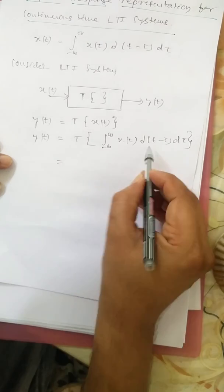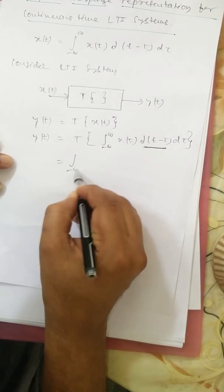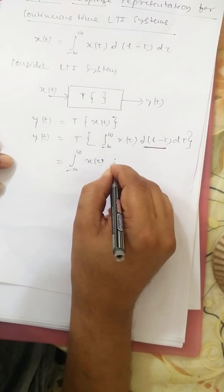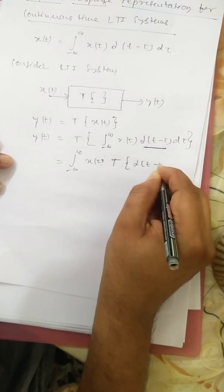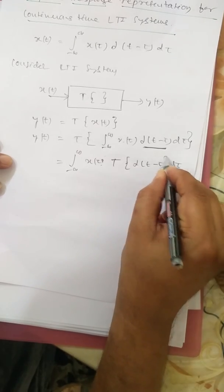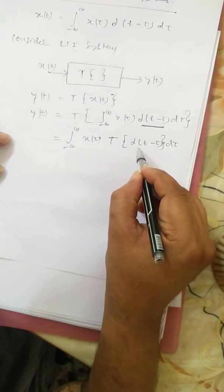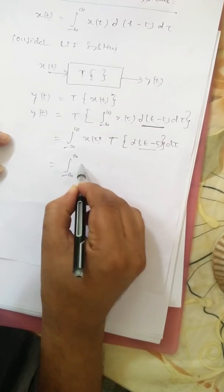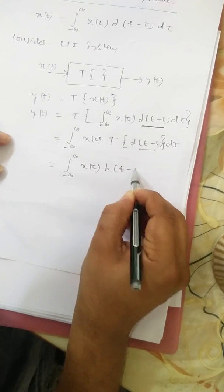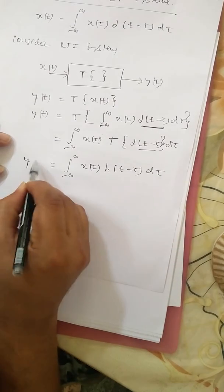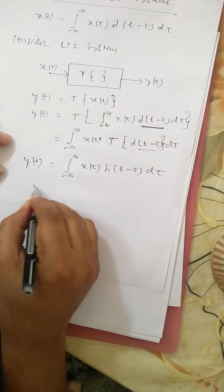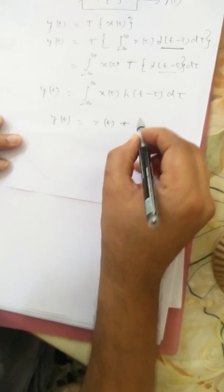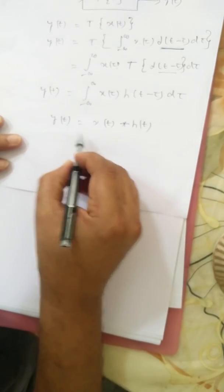Since the input signal is constant, the operation is done on the time-shifted impulses, that is the integral from minus infinity to plus infinity of x(τ) times T{δ(t − τ)} dτ. Since the input signal is δ(t − τ), its output is h(t − τ), giving the integral from minus infinity to plus infinity of x(τ) times h(t − τ) dτ. This is the output of an LTI system, represented as y(t) = x(t) convolved with h(t). This is also known as the convolution integral.